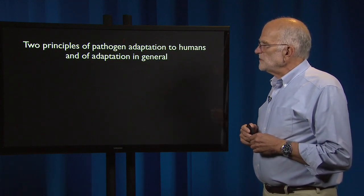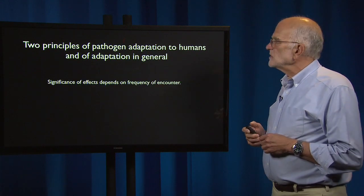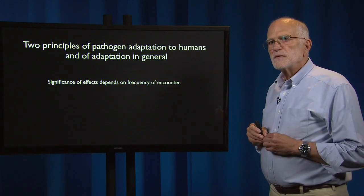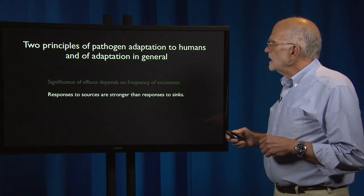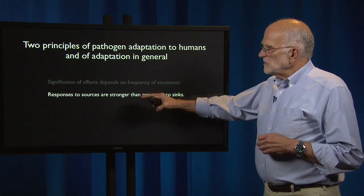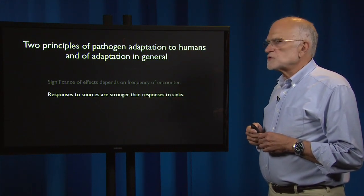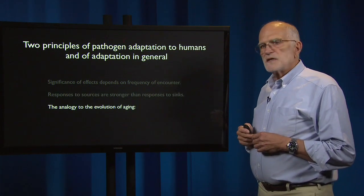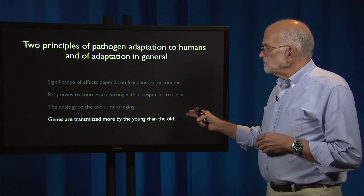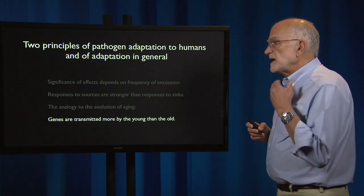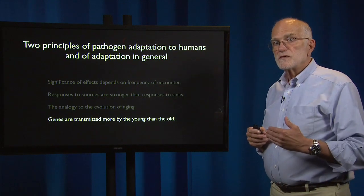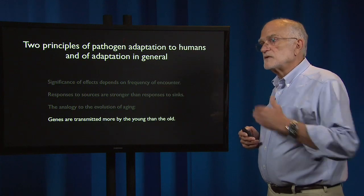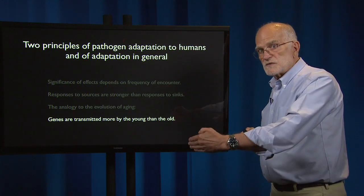There are two principles of pathogen adaptation: first, the significance of effects depends on how frequently a condition is encountered; and second, responses to sources are much stronger than responses to sinks. There is an analogy to the evolution of aging — genes are transmitted more by the young than by the old. Pathogens adapt more to things they encounter frequently than to hosts they spill over into and experience as sinks.